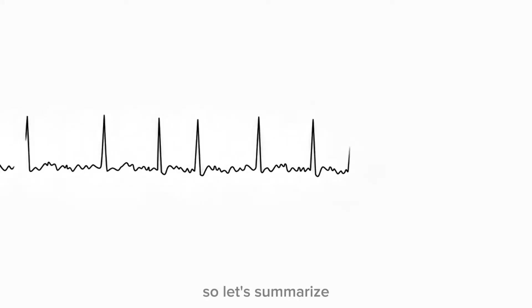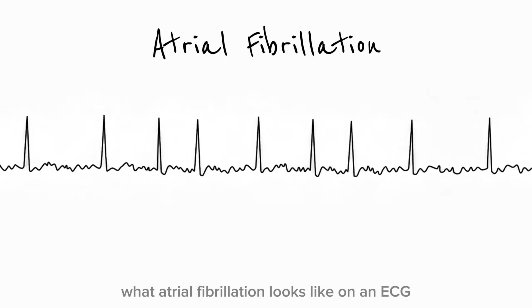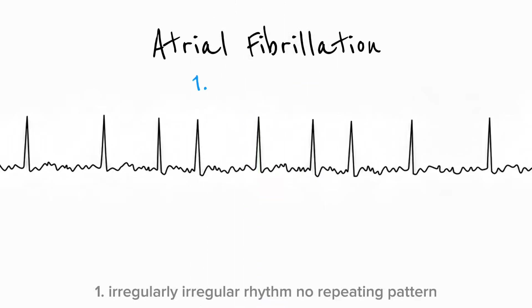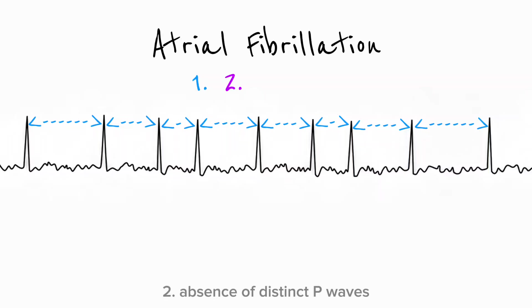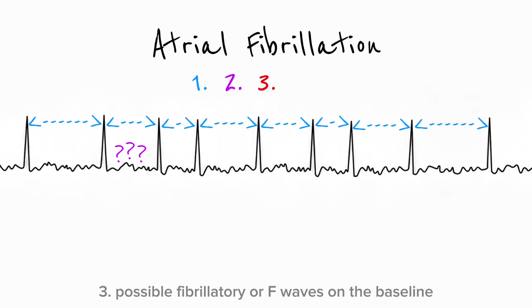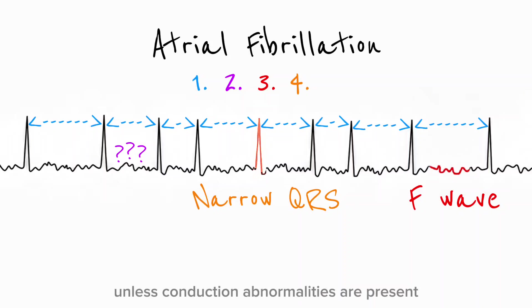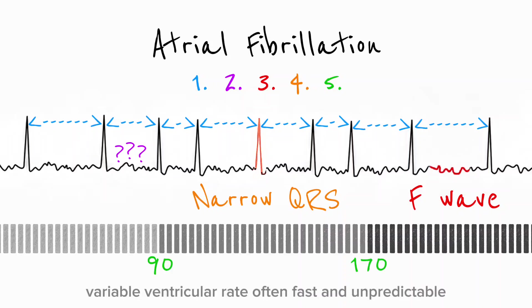So let's summarize what atrial fibrillation looks like on an ECG — think of it as a checklist. 1. Irregularly irregular rhythm, no repeating pattern. 2. Absence of distinct P waves. 3. Possible fibrillatory or F waves on the baseline. 4. Usually narrow QRS complexes, unless conduction abnormalities are present. 5. Variable ventricular rate, often fast and unpredictable.